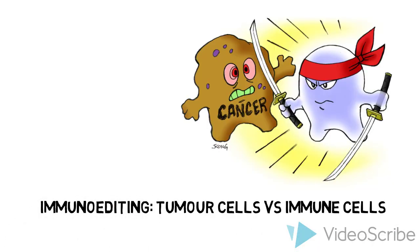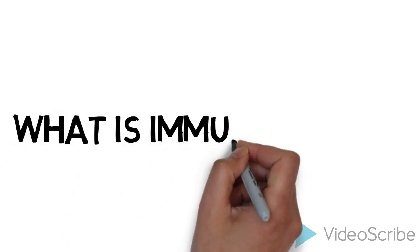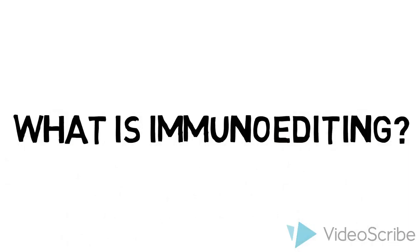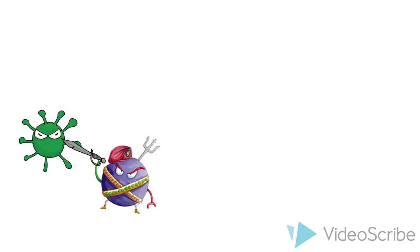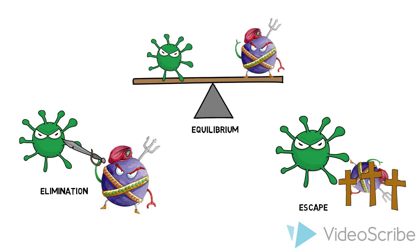Immuno-editing is the body's defense mechanism against cancer. Our immune cells are like a mini army that attacks the enemy tumor cells, but the good guys don't always win. Immuno-editing has three phases: Elimination, Equilibrium, and Escape.